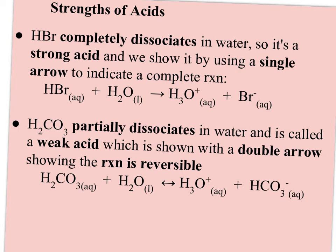So what do you need to know about strong and weak acids, or bases? You should be able to tell, when looking at the dissociation equation, if it's strong or weak. HBr completely dissociates, so it's a strong acid — we use a single arrow to show a complete reaction. Whereas H2CO3 only partially dissociates, so we use the reversible arrow showing the reaction is reversible, and we conclude this is a weak acid.